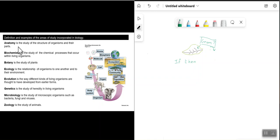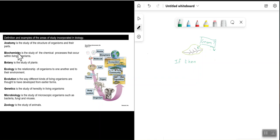Some of the areas of study within biology include: anatomy, which is the study of the structure of organisms and their parts — for example looking at an elephant's circulatory system, bone system, and breathing system. Biochemistry — bio meaning life, chemistry meaning chemistry — is the study of chemical processes that occur within living organisms. For example, how an elephant gets its energy through the process of respiration is biochemistry, because you're looking at how individual molecules react with each other.